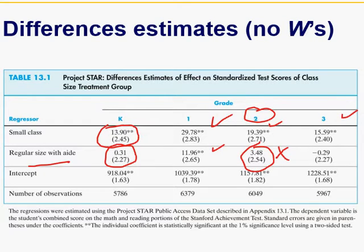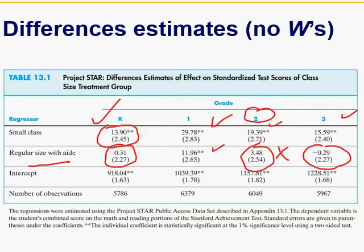At grade 3, small class size shows 16 points better score than regular class, but regular class with an aide has absolutely no effect. In general, small class size leads to improvement in test score. What has been pointed out is that this difference of around 14 points basically remains the same over time — it does not improve. If it was initially 14 points, it remains more or less 14 to 16 points, and does not change much compared to regular class size.